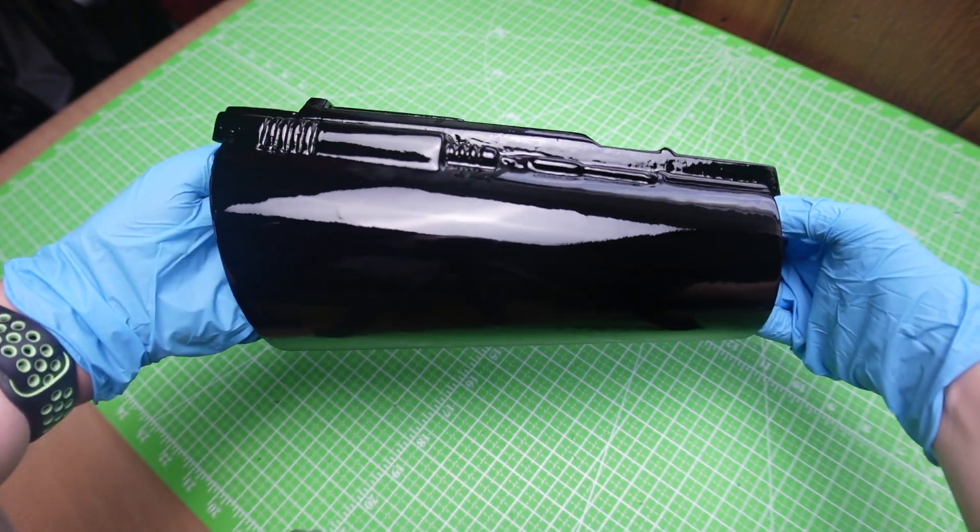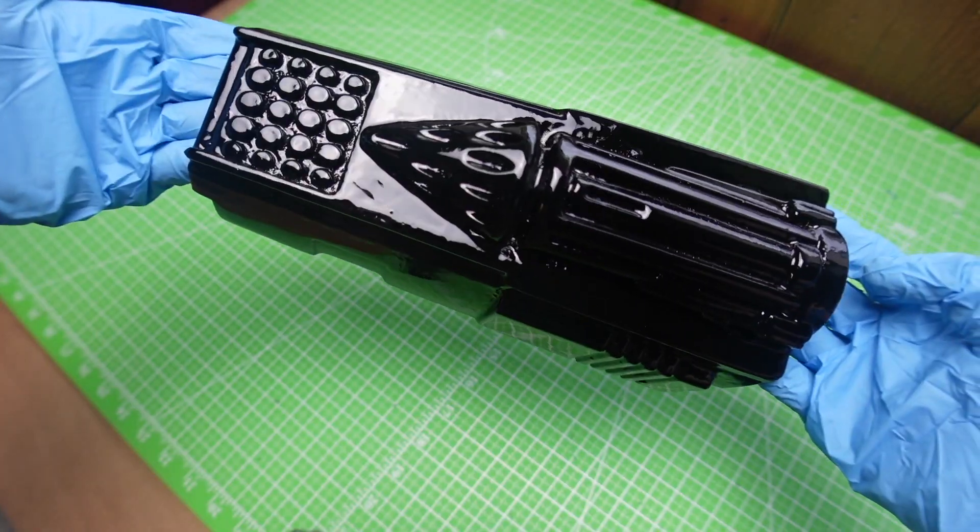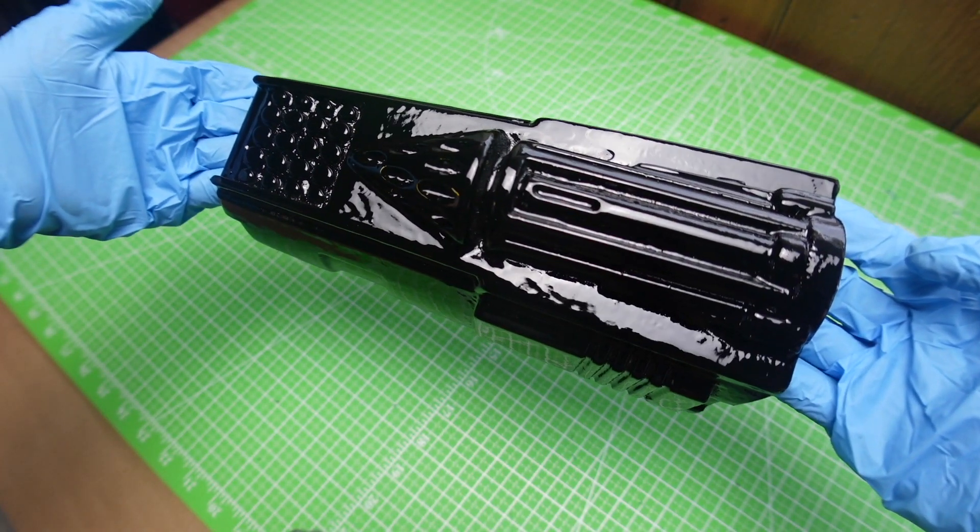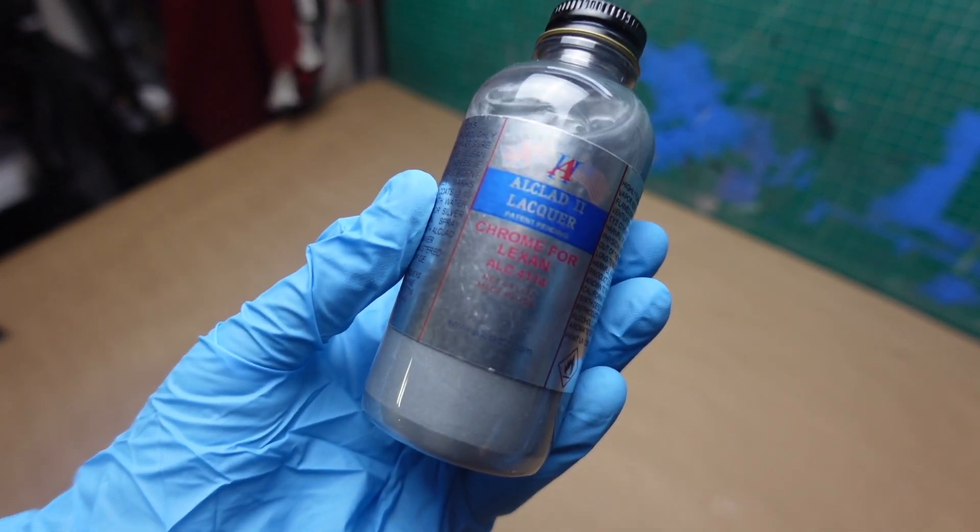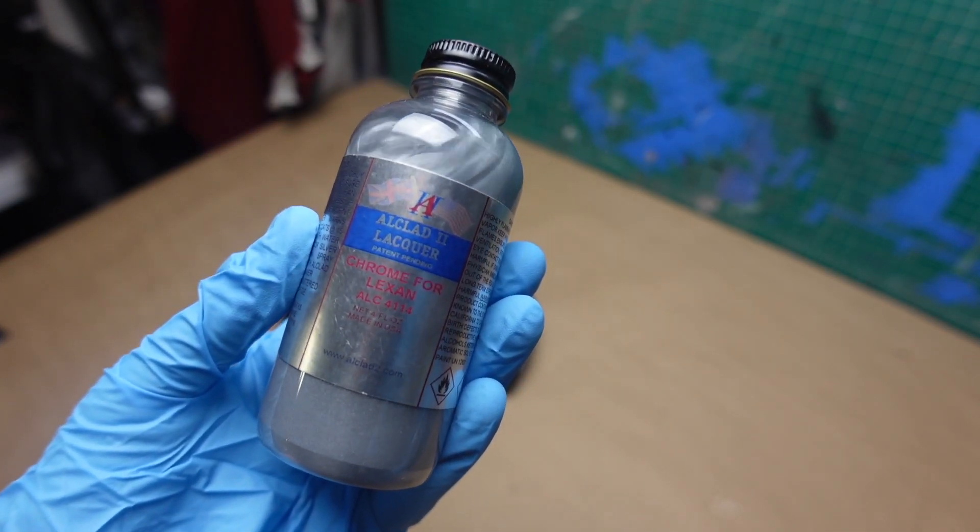After 72 hours the pieces are safe to handle and again I can't get over just how glossy and smooth this stuff gets your pieces. Again wish it wasn't $25 a can but the results are pretty nice. Now that our pieces are prepped we can finally get to painting them and I'm going to be using my airbrush as well as Alclad's chrome.